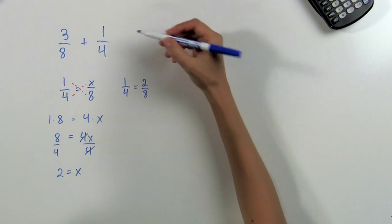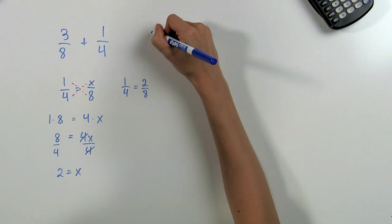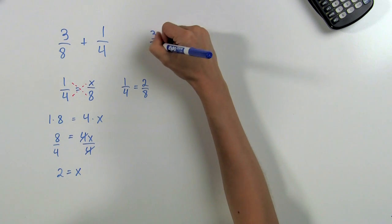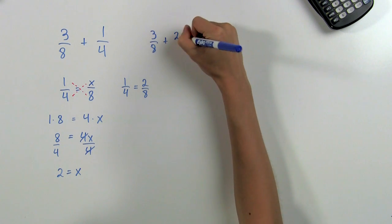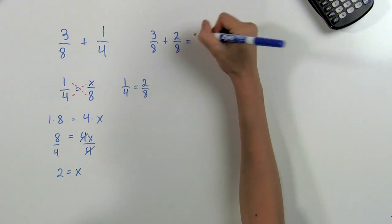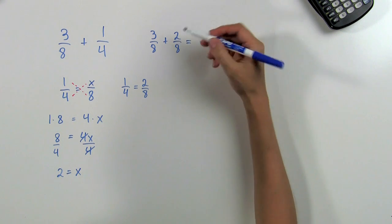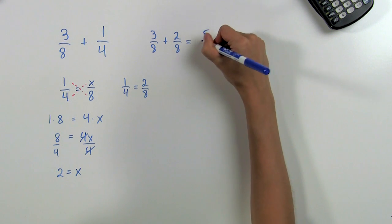This will help us solve our original problem. We can substitute 2 eighths for 1 fourth, and that will give us 3 eighths plus 2 eighths. Now we can add across since they have a common denominator. 3 plus 2 is 5, so we get 5 eighths.